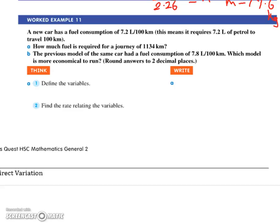Have a look at what they've given you. A new car has a fuel consumption of 7.2 liters per hundred kilometers. This means it requires 7.2 liters of petrol to travel 100 kilometers. How much fuel is required for a journey of 1134 kilometers?